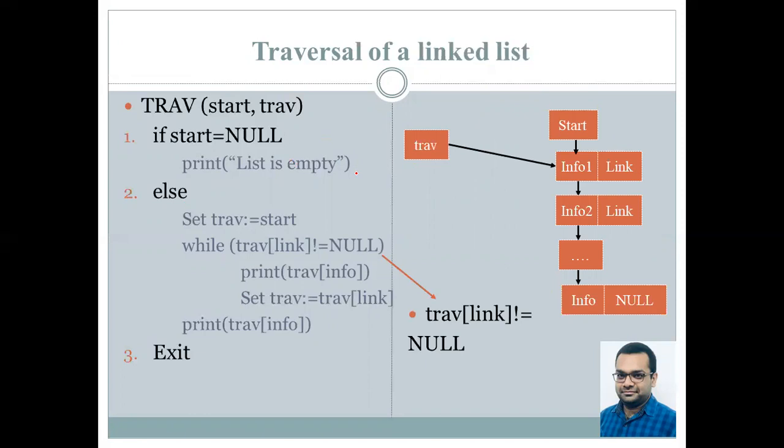Traversal is initialized to the value of start, that is the address of the first node. Clearly, traversal link is not equal to null. Therefore, this information is printed - that is info1, the value in the first node. And traversal's value is incremented to point to the next node, the second node.